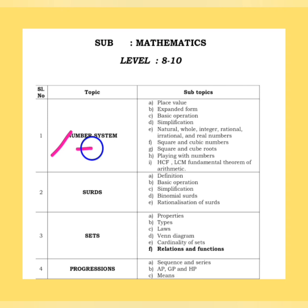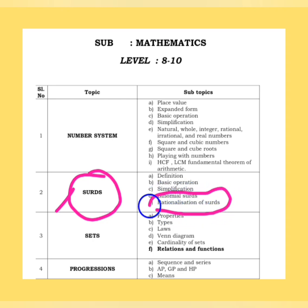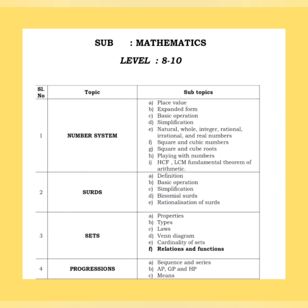Moving to mathematics. First unit is Number System: place value, expanded form, basic operations, simplifications, natural numbers, whole numbers, integers, rational, irrational and real numbers, squares and cube numbers, square and cube roots, playing with numbers, HCF and LCM. Most of this is already covered in previous videos. Surds are also in the HSTR syllabus — concentrate on definition, basic operations, simplifications, binomial surds and rationalization of surds.